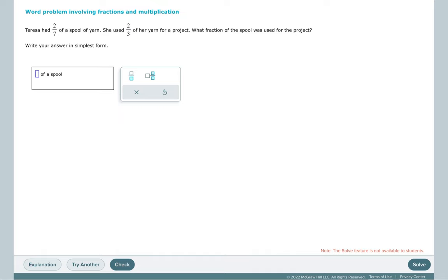One last problem. Teresa had two-sevenths of a spool of yarn. She used two-thirds of that yarn for a project. What fraction of the spool was used for the project?